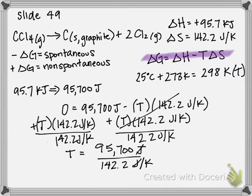Joules cancel, one over Kelvin becomes Kelvin, and our T is equal to 673 K. So that's the temperature that we need to achieve in order for our reaction to become spontaneous.